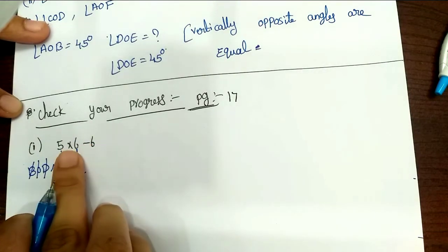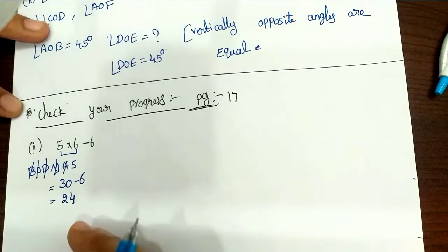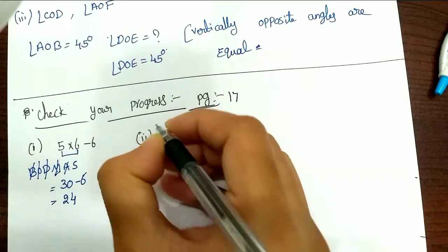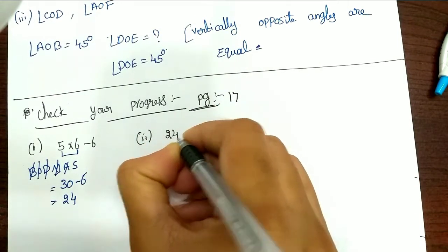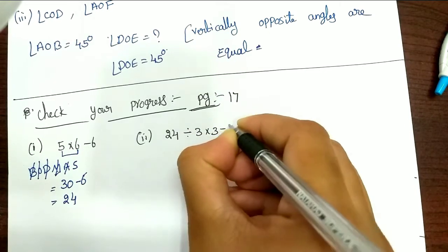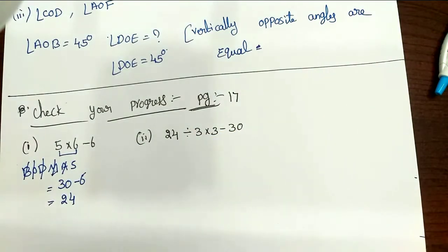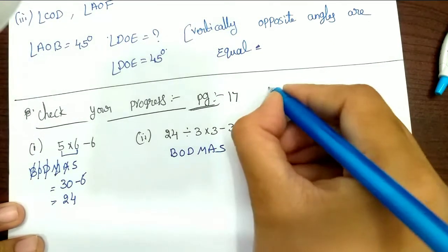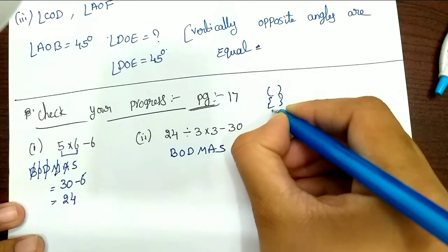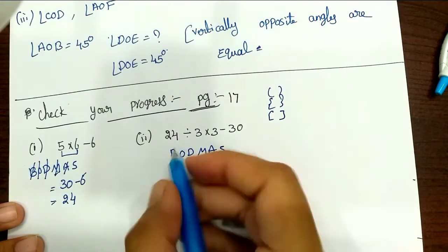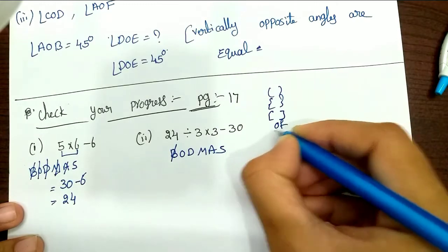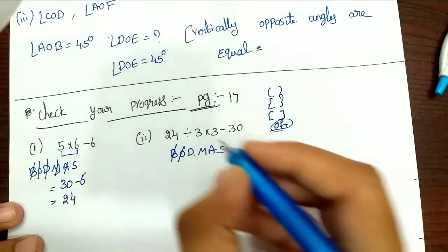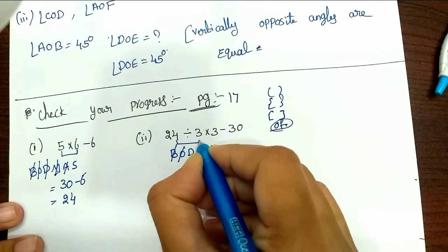6 minus 6 will be 0; 5 into 0 will be 0. So answer is 0. For the second problem, we apply BODMAS — first brackets, then division. Use 24 and 3 to divide; we will have 8. This number is 0 to 3 minus 30. You can confirm that. You can see the division here.